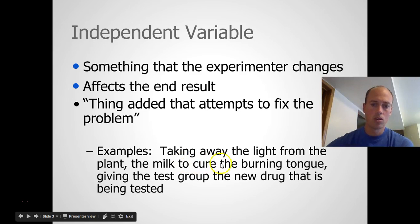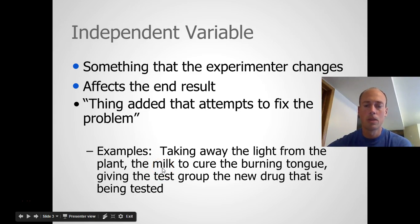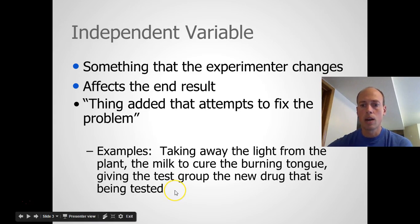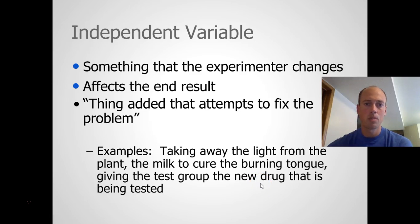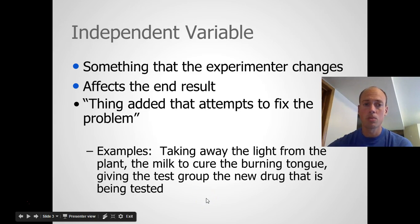The milk to cure the burning tongue in Ada's case of the hot pepper — the milk itself would be the thing the experimenter is changing, so that is the independent variable. Let's say there is a new drug being tested that will cure the common cold. Giving the test group that new drug that is supposed to work — that's the independent variable in that case. The independent variable is the thing you're trying to figure out if it works.